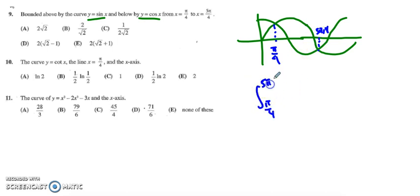So I have pi over 4 to 5 pi over 4 and then look what happens that makes us happy is that the sine curve is always on top, yay, and the cosine curve is always the bottom curve. Makes our lives easier.